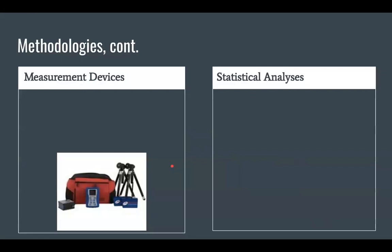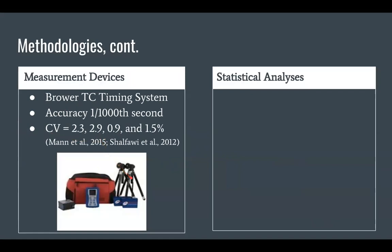We used the Brouwer TC timing system. This has a noted accuracy to one one thousandth of a second and a tested measurement error between 0.9 and 2.9%. Right here, we can see our photo gates that would sit on top of these tripods and they would be facing each other at the 20 meter mark. When the athlete broke through and broke the light beam, it would stop the remote right here that I would be holding that I manually started.